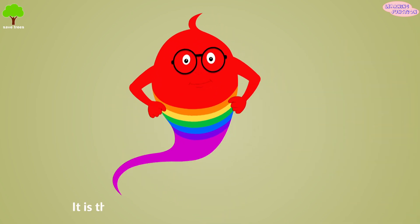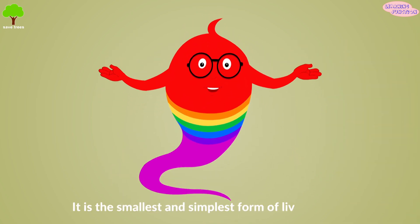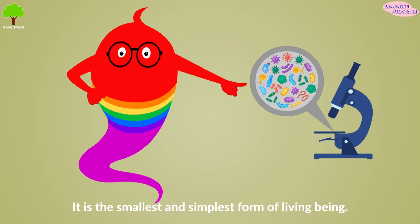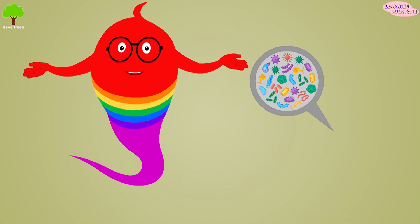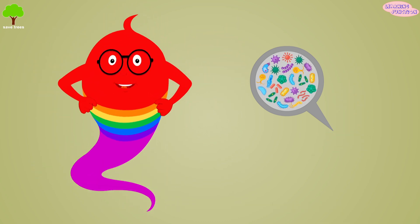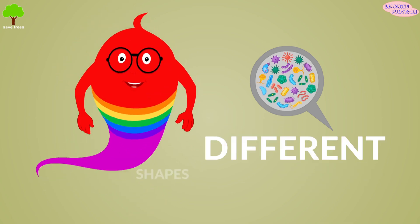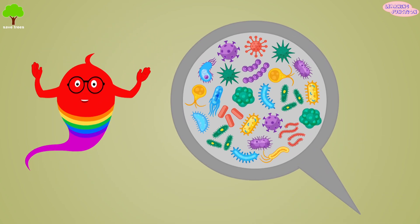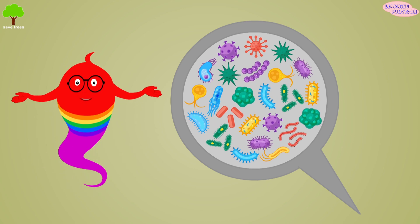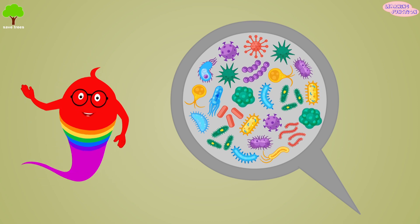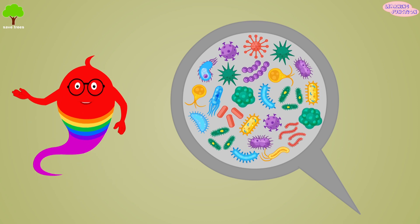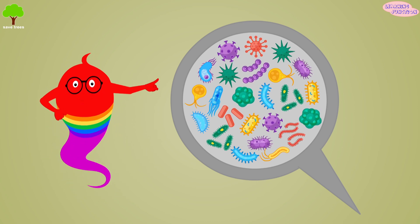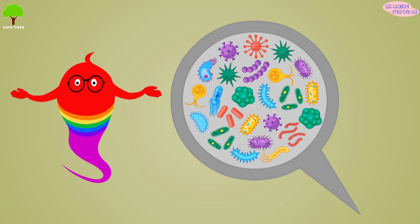In other words, it's the smallest and simplest form of living being, which can be visible only with a microscope. Microbes or microorganisms come in many different shapes, varieties, and sizes. They make up the largest number of living organisms on the whole planet. There are trillions of trillions of trillions of microbes all around the Earth, maybe more.